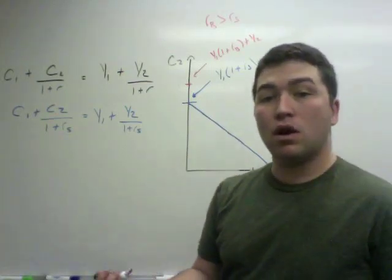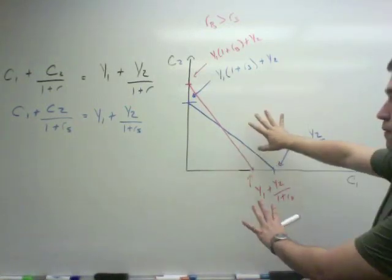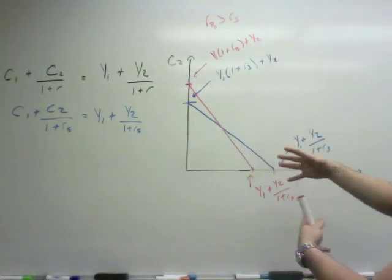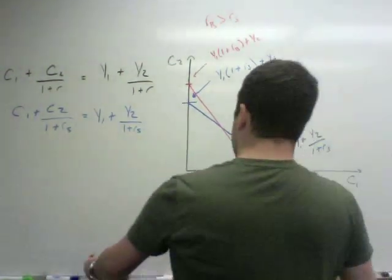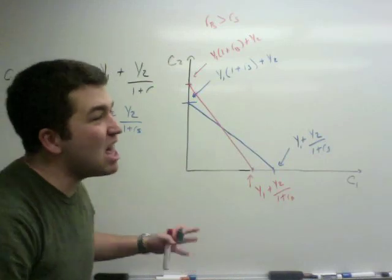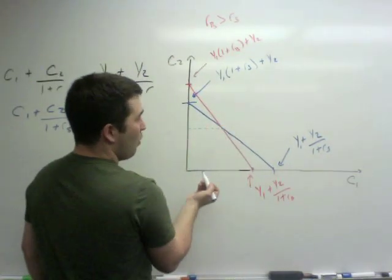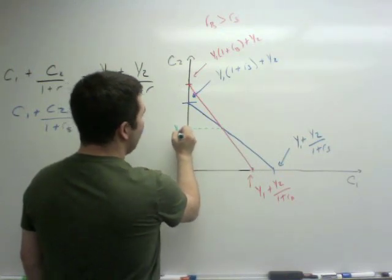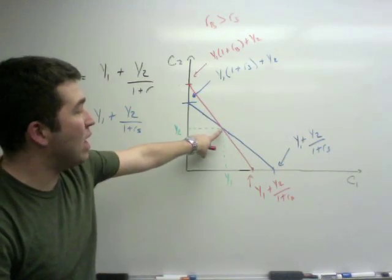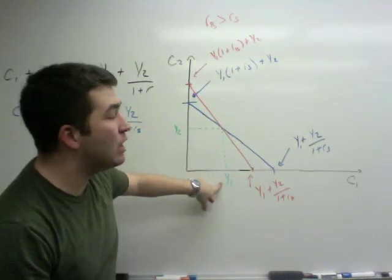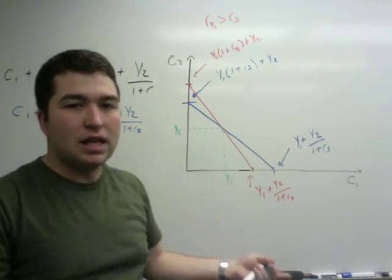Just like before, we're just going to connect them to get our budget constraint. The cool thing about this finished product, showing the two different interest rates that this agent may face, is that the point which they cross right here should be the point at which they consume Y2, Y1. And what does that mean? That means at that point, they would consume in period 1 all their income and in period 2, they would consume all their income.